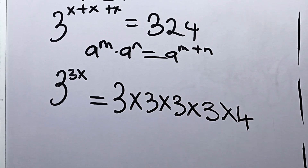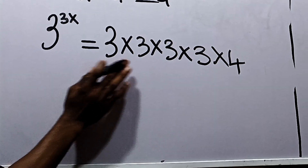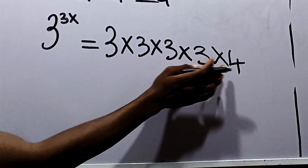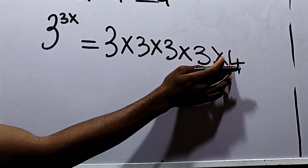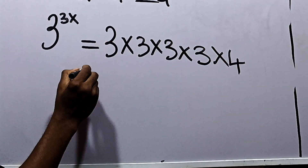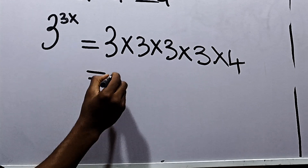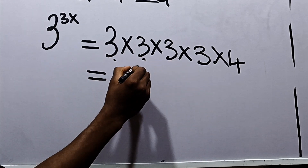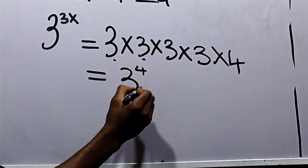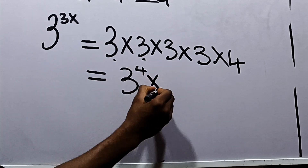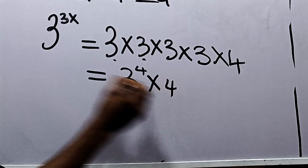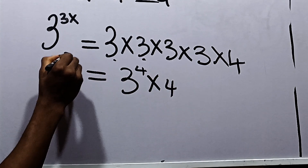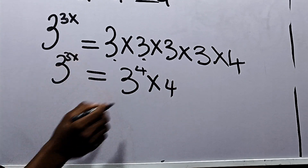Now 3 times 3 is 9, 9 times 3 is 81, and 81 times 4 is 324. So this can be written as 3 times 3 times 3 times 3 — that is 3 appearing 4 times — which is 3 raised to the power 4, times 4. And then we have 3 raised to the power 3x equal to this.